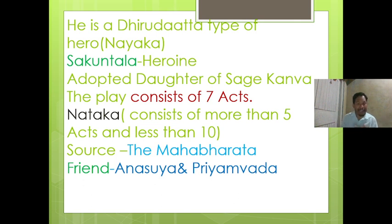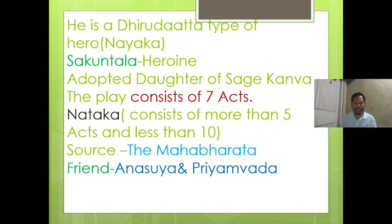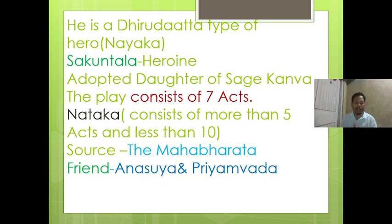In Nataka, the plot should be a popular one, the hero must be a king, and the third feature is that the number of acts should not be less than five and should not be more than ten — that is, it should be between five and ten acts. Abhijnanashakuntalam consists of seven acts, and its main source is taken from the Indian epic Mahabharata.